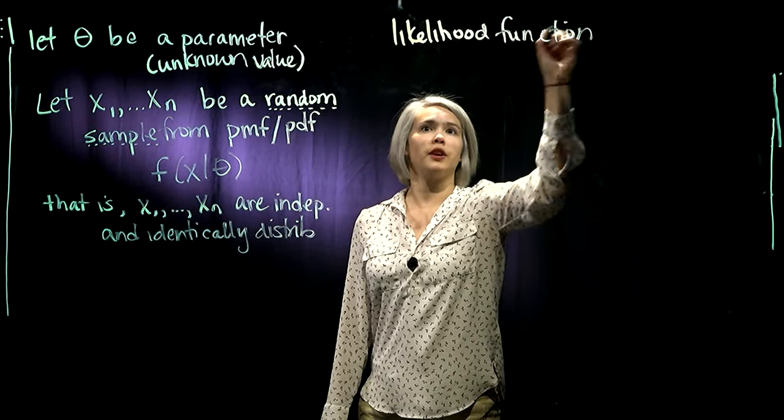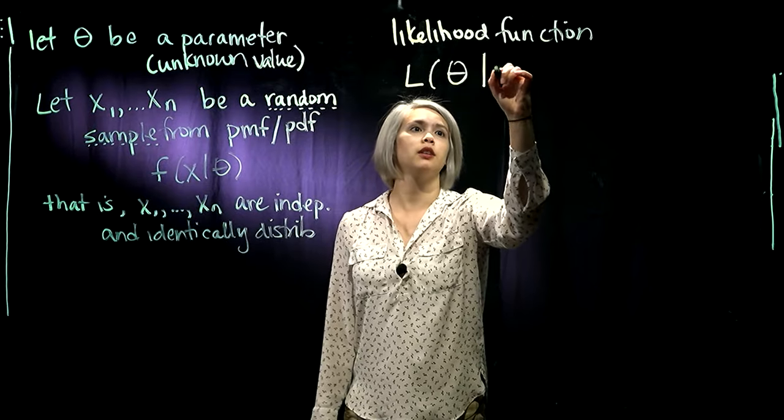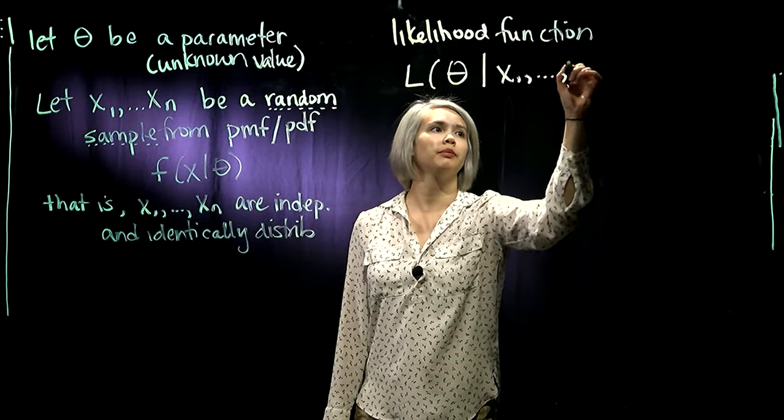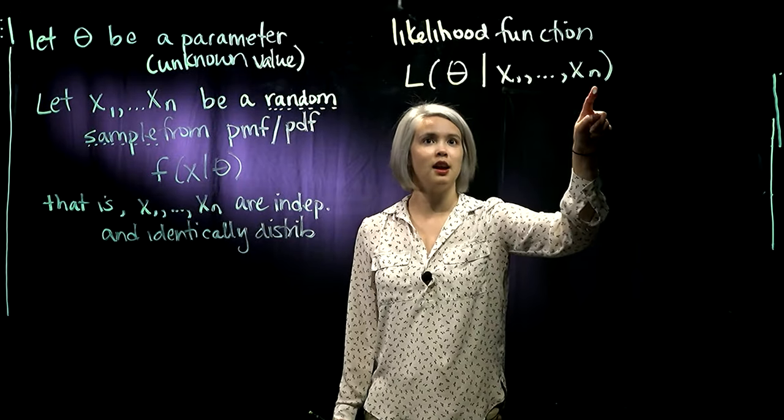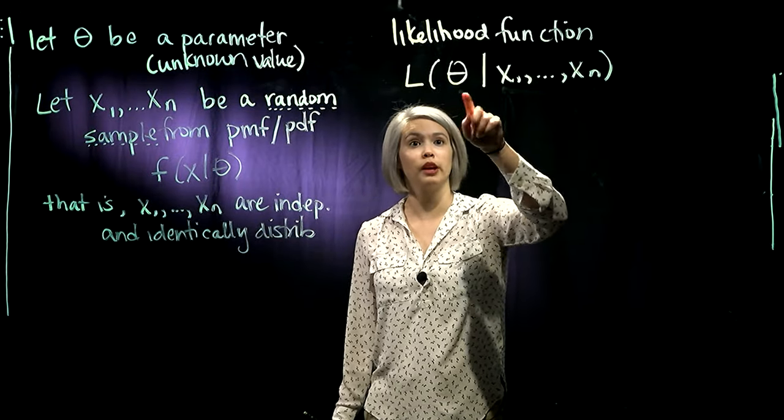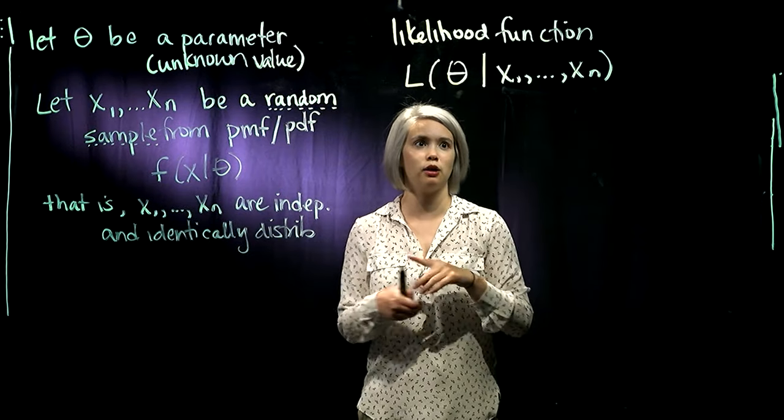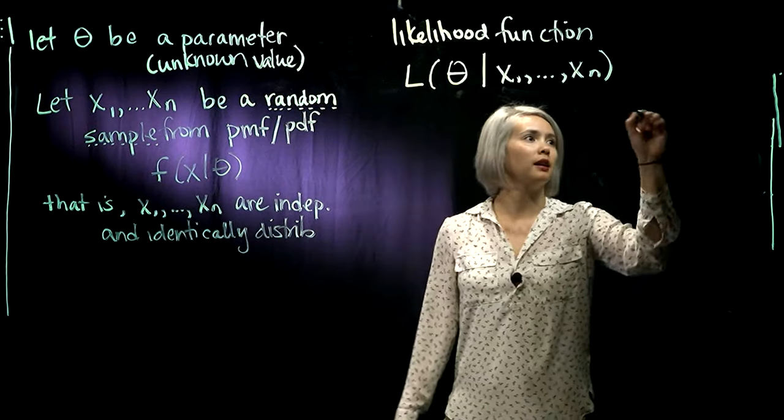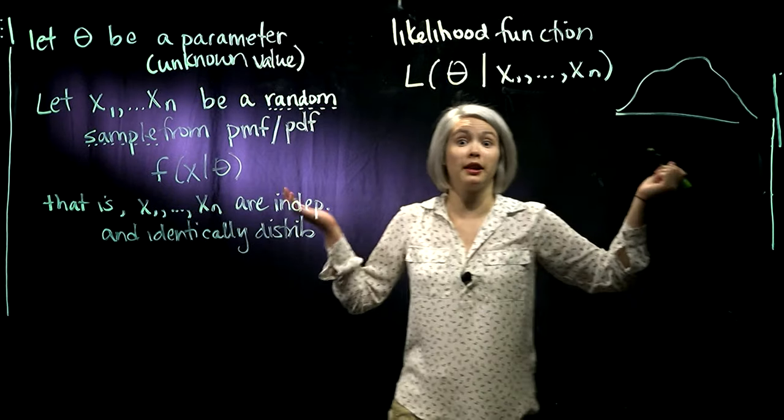And this is just a function of our parameter given the data that we've observed. So we are holding constant x1 through xn, and now we're seeing if we plug in different values of theta, what likelihood do we get out? So maybe we could plot it, and our likelihood function might look something like that.